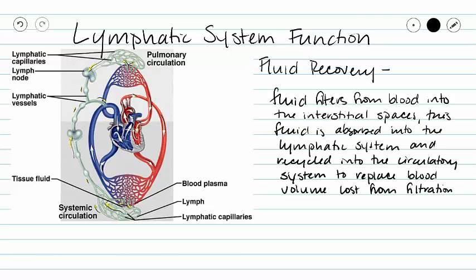In your circulatory system, at your capillaries, blood is filtered through the capillaries. During that filtration process, fluids are forced from the blood into the interstitial spaces. This fluid that's now in our interstitial spaces is going to be picked up by the lymphatic system and recycled back into venous circulation to replace the volume of blood that was lost during that filtration process.